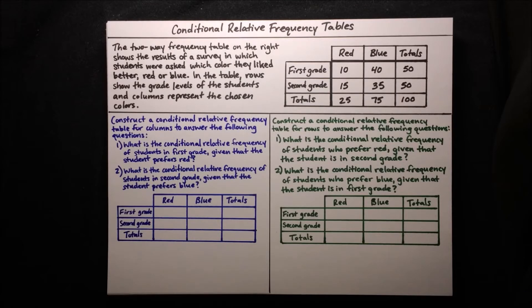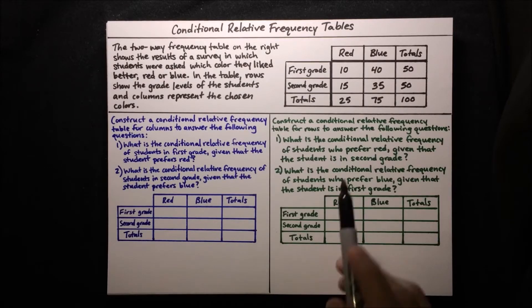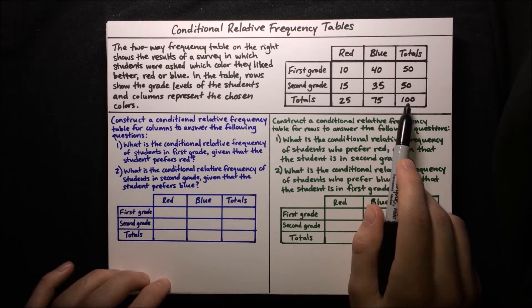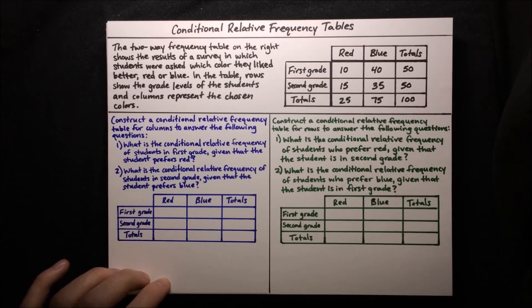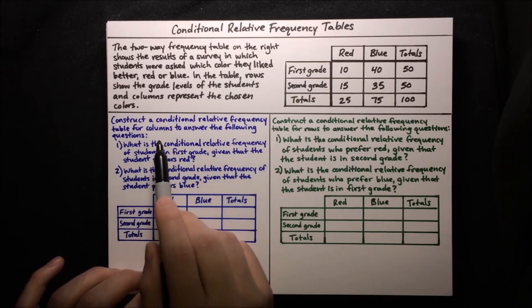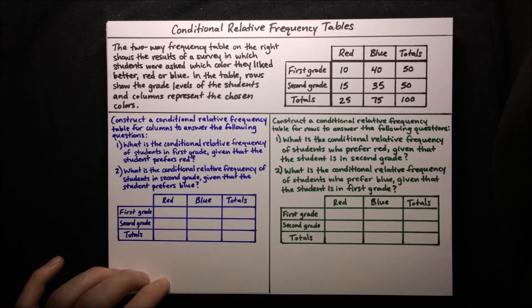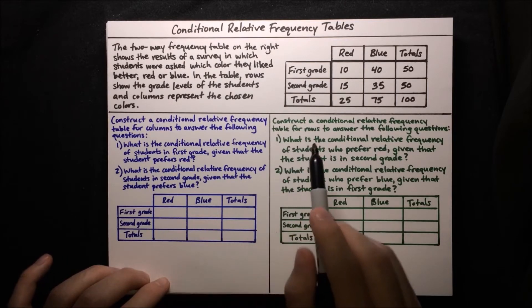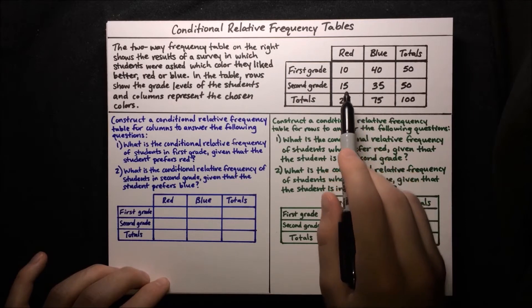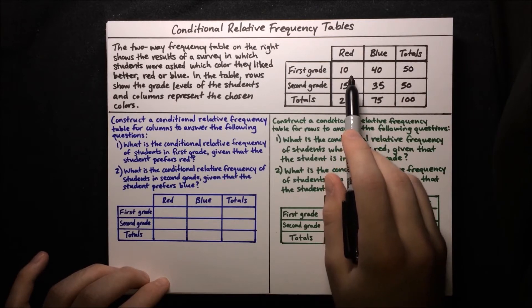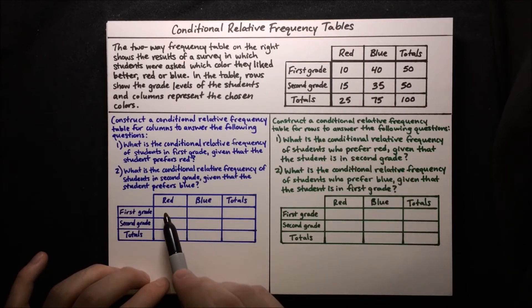Normally, when you think of relative frequency, you think of survey results taken relative to the entire population. So for example, since the entire population is 100, the relative frequency of first graders who prefer red would be 10 out of 100, or 10%. But here we're interested in conditional relative frequency for columns. When we think about what to fill in the top left corner, we need to think: what is the relative frequency of first graders who prefer red, conditional on the fact that they're in this column — in other words, out of all 25 students in this column, what portion are in first grade?